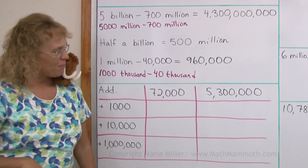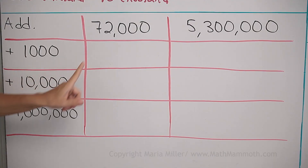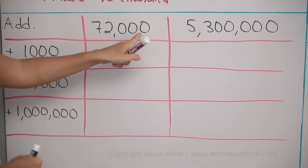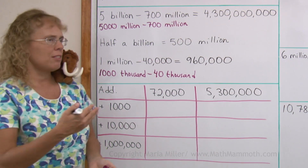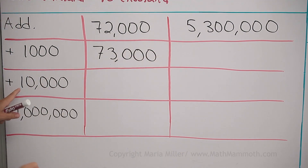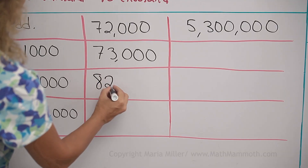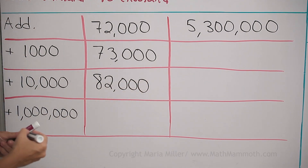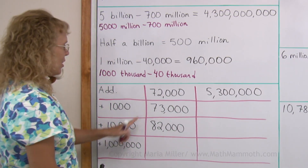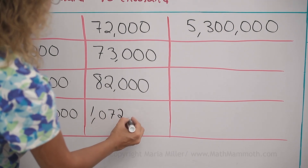Next I have a little addition table, like you're used to from first grade. There's seventy-two thousand, and we're going to add one thousand to it, also add ten thousand to it, and one million to it. Seventy-two thousand plus one thousand — that's like seventy-two plus one — so we get seventy-three thousand. Then seventy-two thousand plus ten thousand — it's like seventy-two plus ten — we get eighty-two thousand. Lastly, one million and then seventy-two thousand — the answer is one million seventy-two thousand. I just need to write one million and seventy-two thousand.